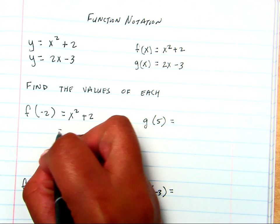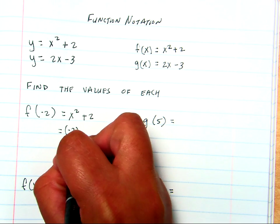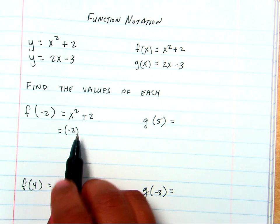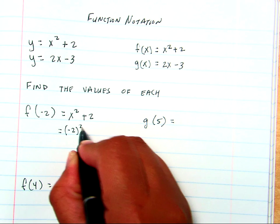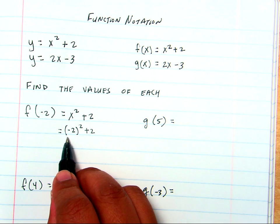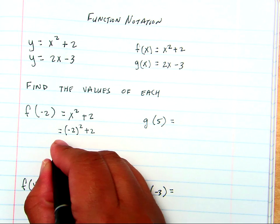So, we're going to say, and anytime we're placing a number in for a letter when we're substituting, we're going to use parentheses. So, negative 2 squared plus 2. Well, negative 2 squared is 4, and 4 plus 2 is 6.